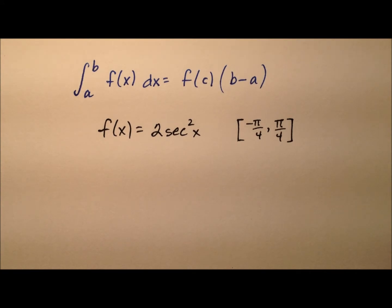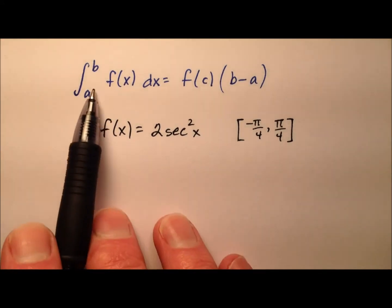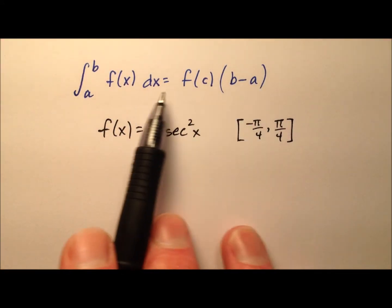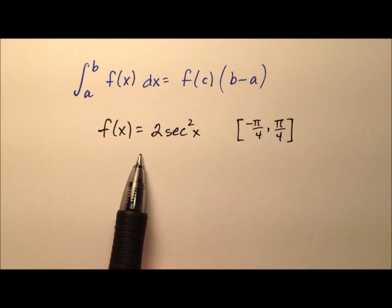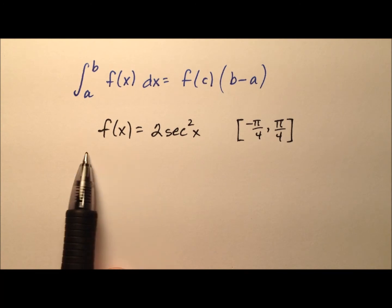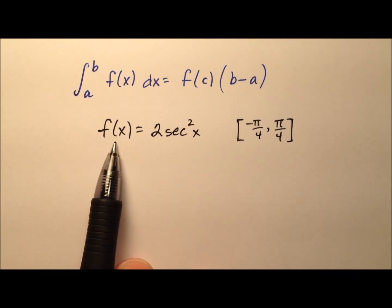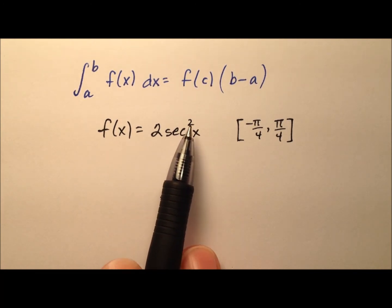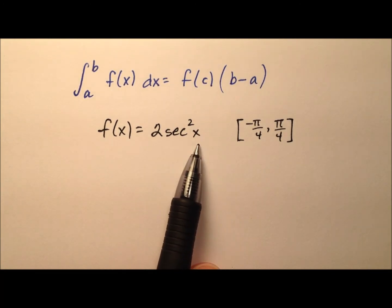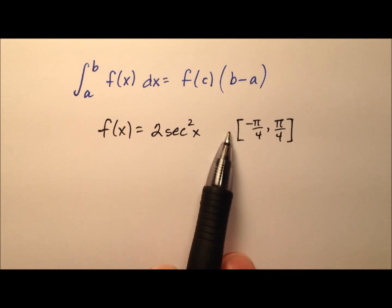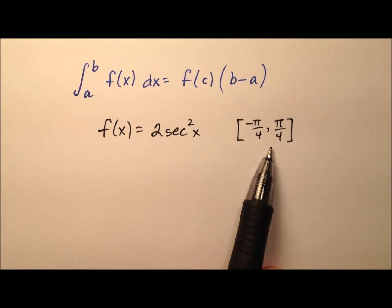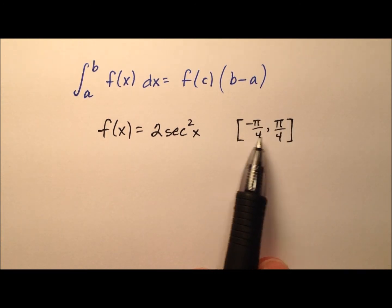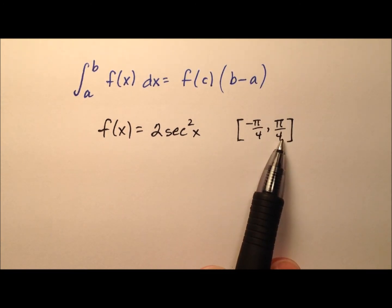In this example, I want to take a look at the mean value theorem for integrals, and I want to apply it to this function, f of x equals 2 times the secant squared of x, and I'm going to do so over this closed interval negative pi over 4 to pi over 4.